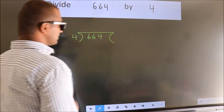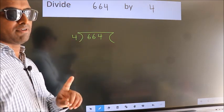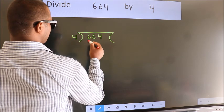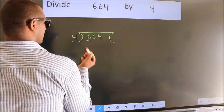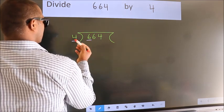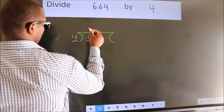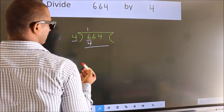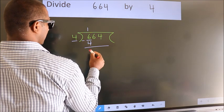This is your step 1. Next, here we have 6, here 4. A number close to 6 in 4 table is 4 once 4. Now, we should subtract. We get 2.